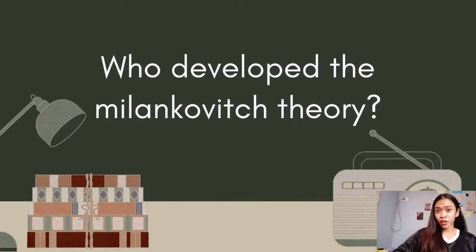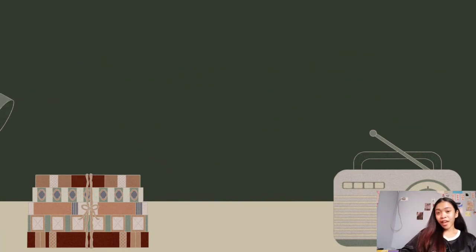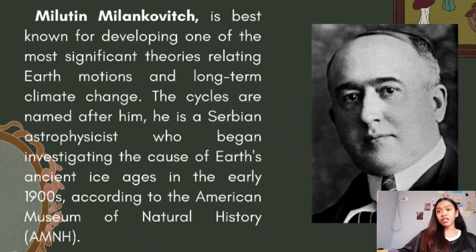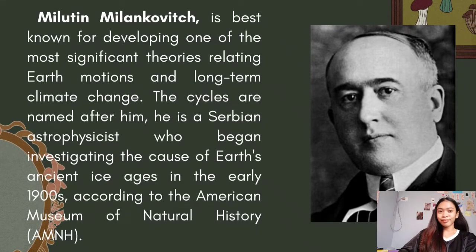Who developed the Milankovitch theory? The person who developed it is none other than Milutin Milankovitch. He is a Serbian astronomer who began investigating the cause of Earth's ancient ice ages in the early 1900s, according to the American Museum of Natural History. The cycles are named after him, and this is what he looks like.